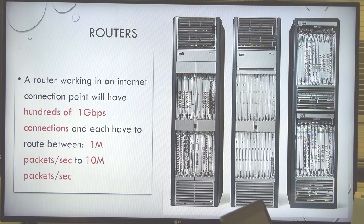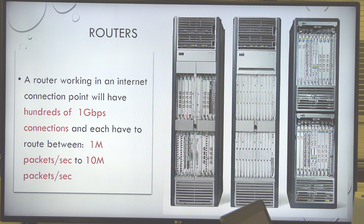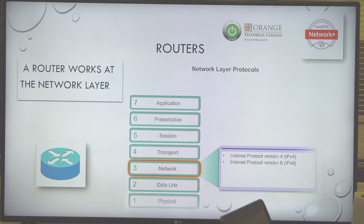On an ISP router, each connection is a gigabit or 10 gigabit. Every connection you see on those bus bars and large slide-in racks is probably 1 Gig or 10 Gig — this is typically what you'd see in Tampa and Miami at internet connection points. With a gigabit connection, the router has to route between 1 million and 10 million packets per second: open them, inspect them, find the destination IP, check the routing table, and send them in the right direction. That's why they cost a million dollars.